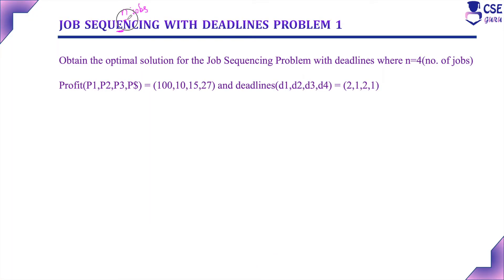In this problem, n jobs will be given. Associated with each job, deadline and profit will be given. The problem is we need to find the set of jobs that should be completed within that deadline and should earn maximum profit. We have already discussed the concept of job sequencing with deadline and the design steps along with the Greedy algorithm in the previous session.